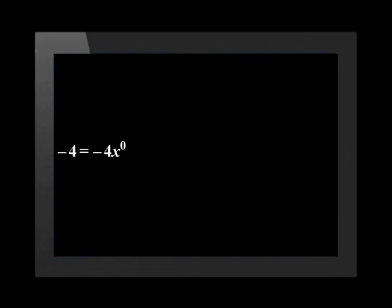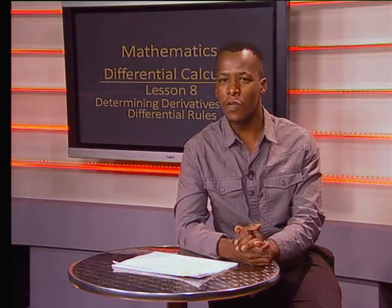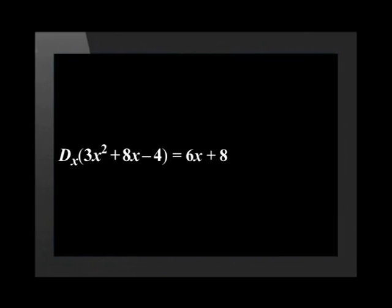The derivative of any constant value is 0. Let's spend a moment to explore why this is the case. Remember, any constant value has a variable with a power of 0. Therefore, minus 4 is equal to minus 4x to the power of 0. If we determine the derivative of minus 4x to the power of 0, we multiply 0 — the original power — by the coefficient, and we minus 1 from the original power. This is equal to 0. Now that we have determined the derivative of each separate term, let us look at the overall answer: the derivative of 3x squared plus 8x minus 4 is equal to 6x plus 8.